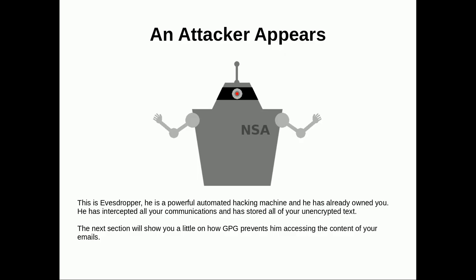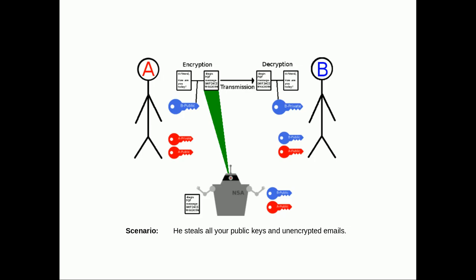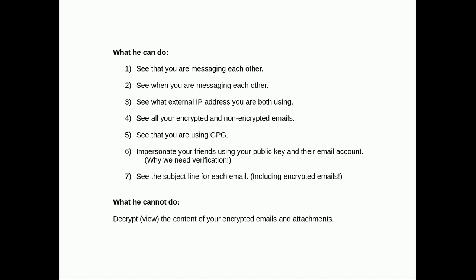An attacker appears: this is Eavesdropper — a powerful automated hacking machine. He has intercepted all of your communications and stored all of your unencrypted text. In this scenario, Eavesdropper has stolen both public keys when they were transmitted, and all unencrypted text. What can he do? He can see that you're messaging each other, exactly what time, possibly your external IP addresses, all unencrypted emails, and the encrypted ones — though he can't break into those. He'll also see that you're using GPG, and if he hacks into your friend's email account, he could impersonate them using your public key. He'll also be able to see the subject line of each email.